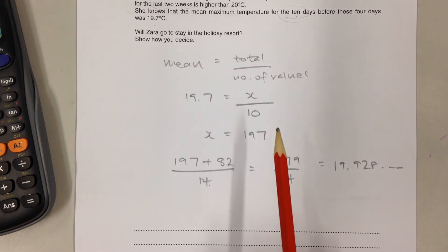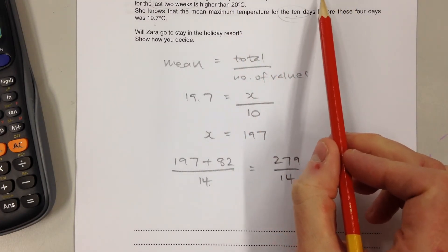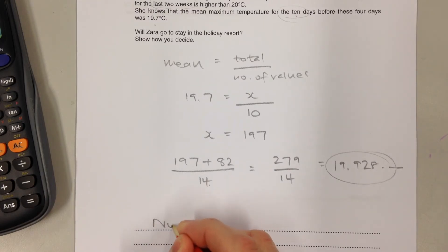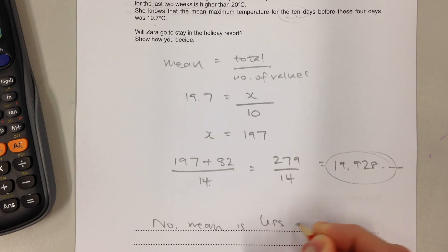She decides she's going to stay if the mean maximum temperature is higher than 20. The mean maximum temperature is lower than 20, so is she going to stay in the holiday resort? No, because the mean is less than 20.